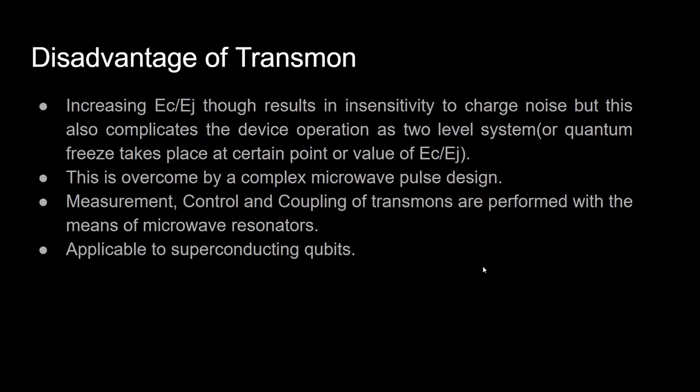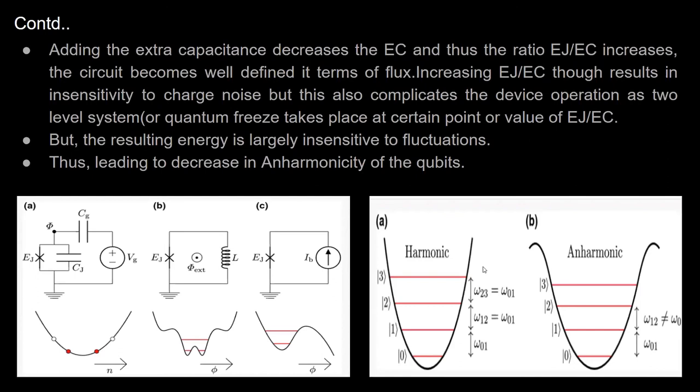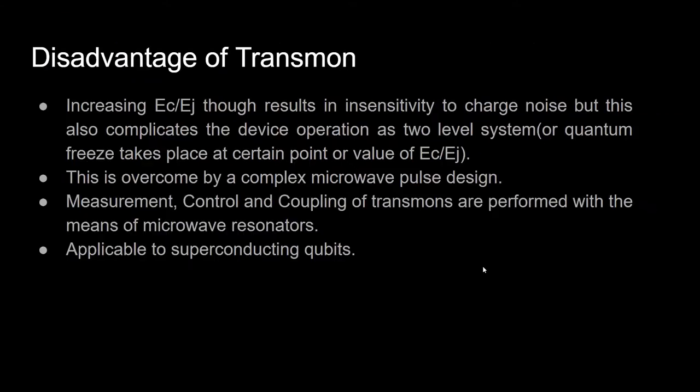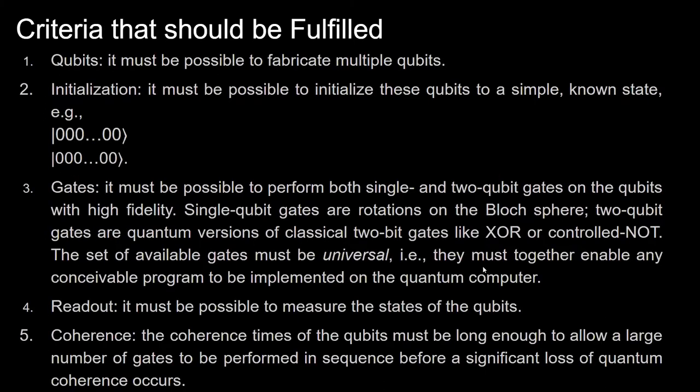A disadvantage of the transmon is that increasing the EJ/EC ratio reduces sensitivity to charge noise but complicates operation as a two-level system. Quantum freeze — the occurrence where qubits no longer retain their quantum nature — is a concern. Anharmonicity is necessary for a qubit to work properly. I'll now jump to my project.